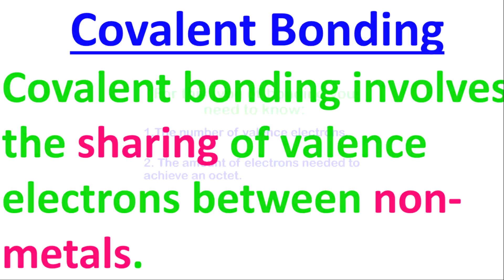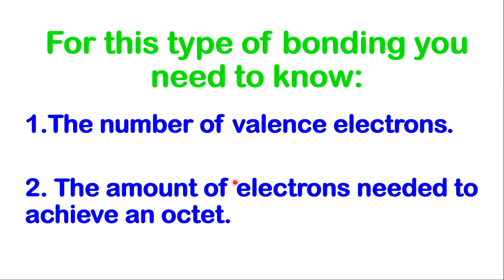The other concept is that for this type of bonding, you need to know the number of valence electrons you are working with. You also need to know the amount of electrons needed to achieve an octet, which means the number of electrons needed to complete the valence shell or to make that valence shell satisfied with the maximum number of electrons. Now let's jump into some examples.